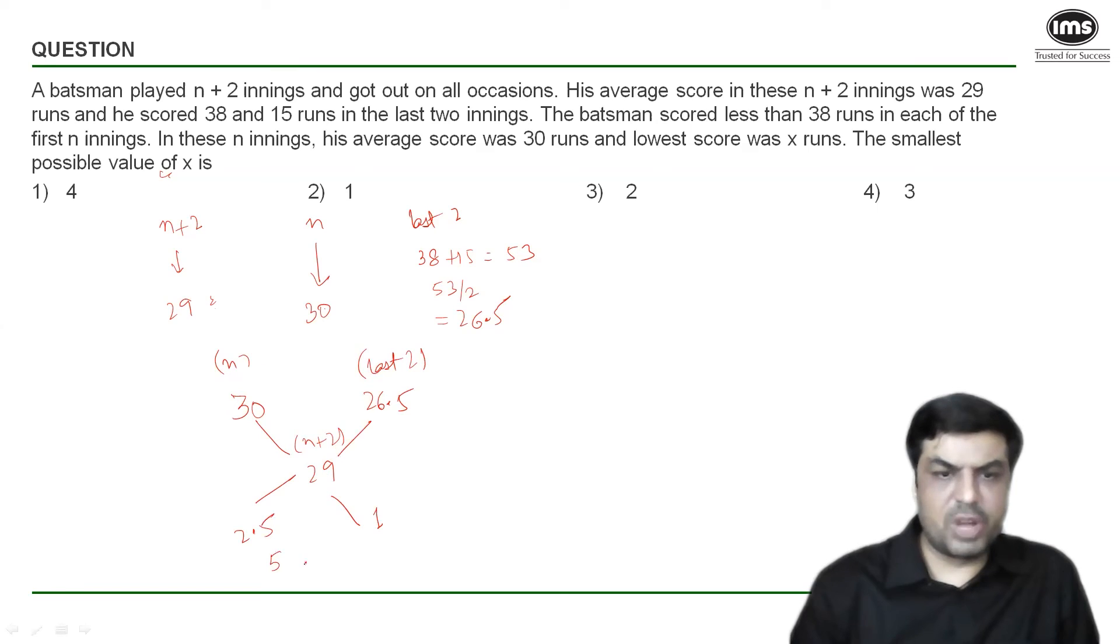The simplest integral ratio of 2.5 is to 1 is 5 is to 2. Now what does this 5 and 2 represent? 5 represents n innings and 2 represents the last two innings because the last two innings are 2, that means two parts is equal to 2 so 5 parts will be equal to 5. So from here I can say that n must be equal to 5.